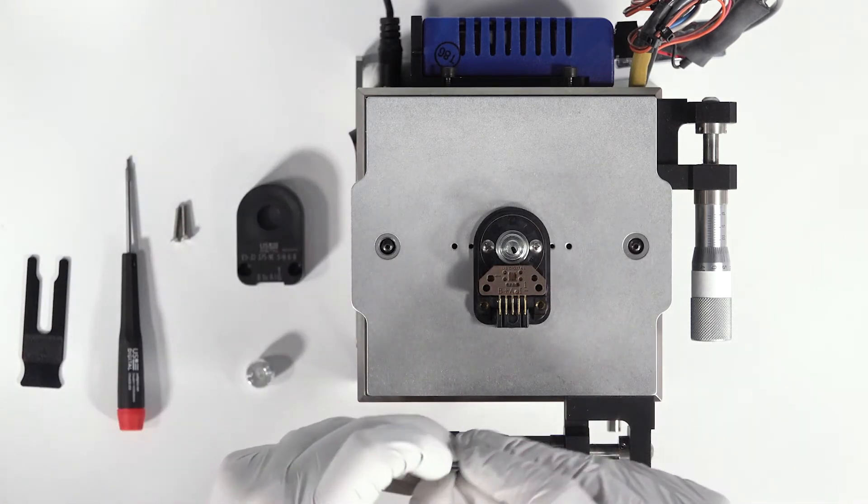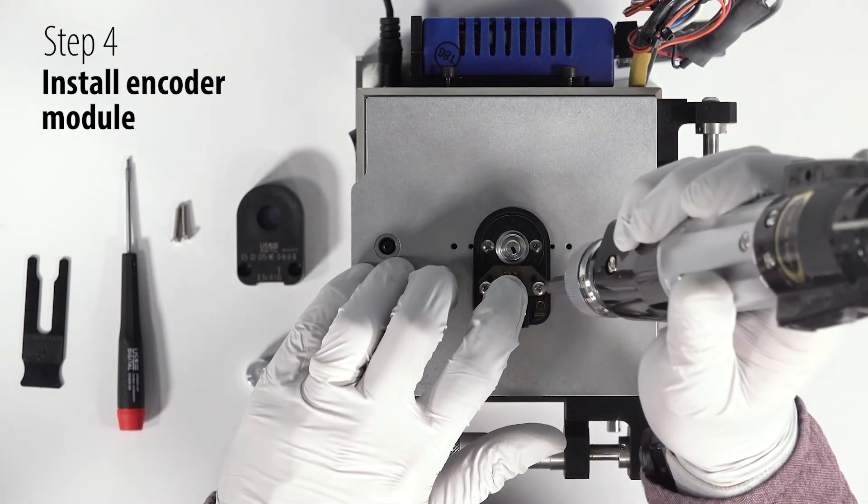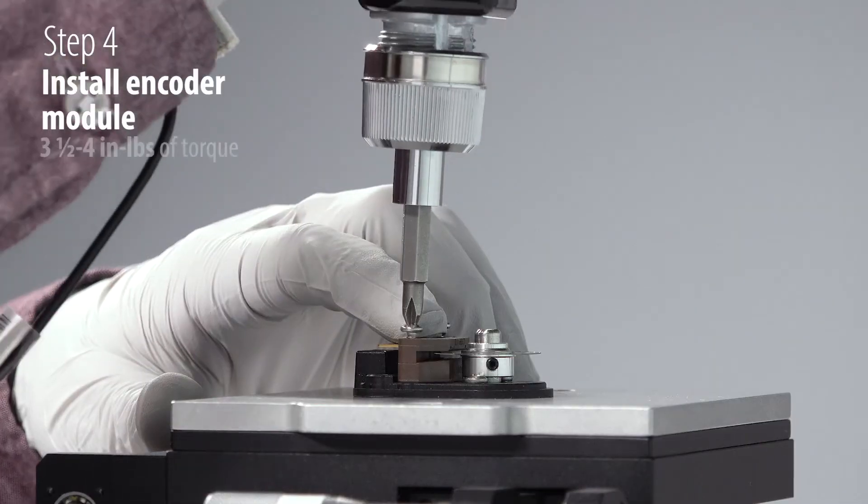The last step with the module is these screws to secure it in place, which are tightened to three and a half to four inch pounds.